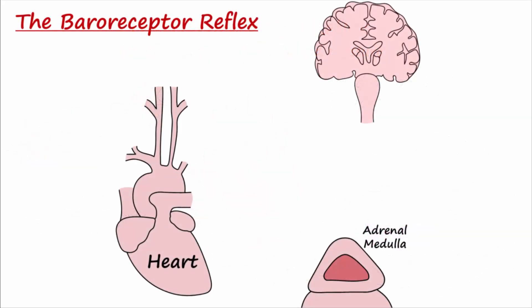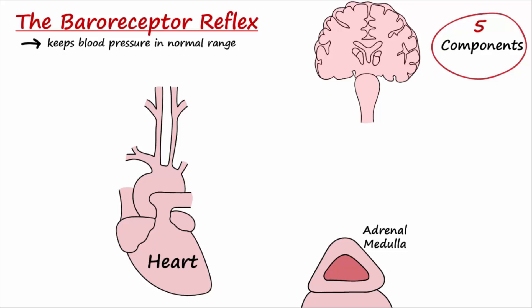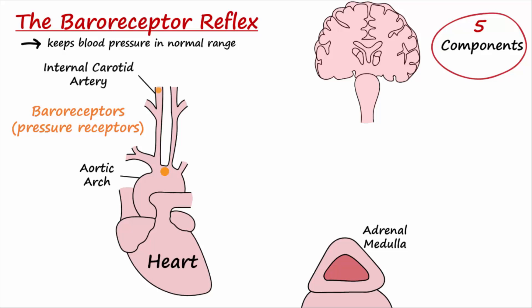The function of the baroreceptor reflex is to keep blood pressure in normal range. There are five main components to this reflex. First are the receptors: baroreceptors sense pressure and reside in the aortic arch and carotid sinuses. The carotid sinuses are located in the internal carotid arteries just distal to the bifurcation of the common carotid arteries. These receptors are stretch receptors whose rate of generating action potentials corresponds to blood pressure.